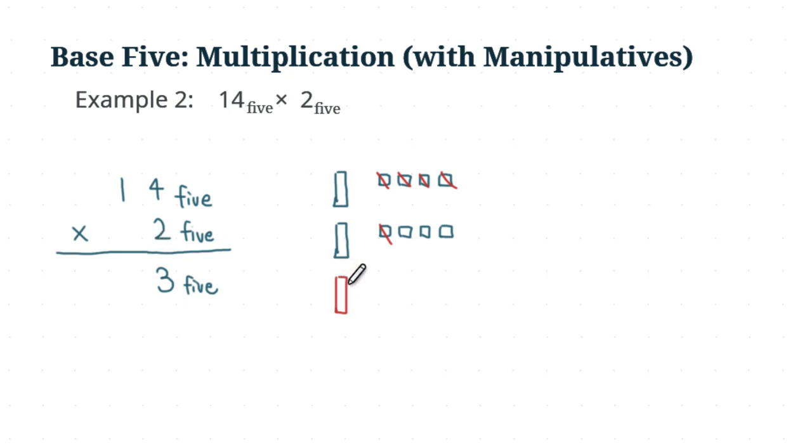We removed those five units and converted them into one long, so we are going to get a long here - that's a 1. That's how I do the carrying. Now you are just going to multiply the longs.